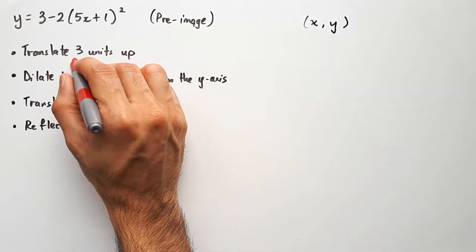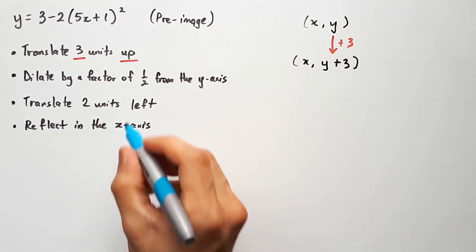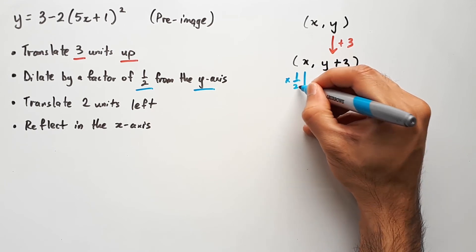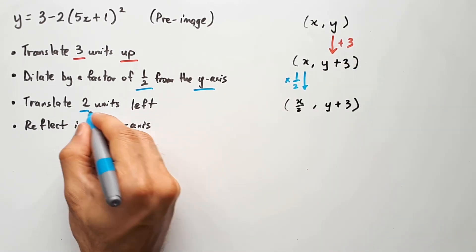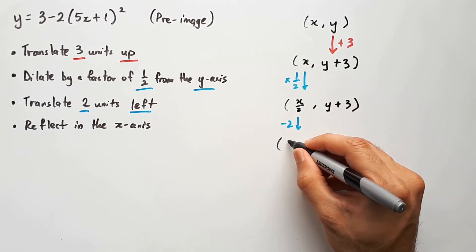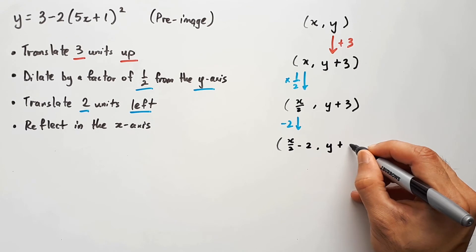From here we need to translate three units up, and so we take the y value and plus 3, followed by dilating a factor of half from the y-axis, so we would take the x value and times half, and then translate two units to the left. So we're going to take x/2 and minus 2, since we want to change the entire x value and not just the x variable of the coordinate.